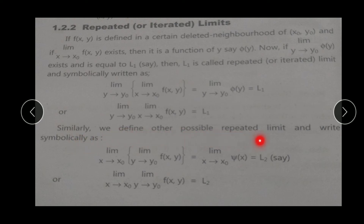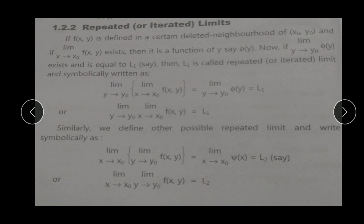Similarly, we define the other possible repeated limit. Now we change the order: first apply limit as y → y₀ on f(x,y), giving psi(x), then apply limit as x → x₀. If this exists and equals L₂, then lim[x→x₀] lim[y→y₀] f(x,y) = L₂. In repeated limits, दो तरीके से limit find कर सकते हैं: पहले x की limit फिर y की, या पहले y की फिर x की. These are known as repeated or iterated limits.